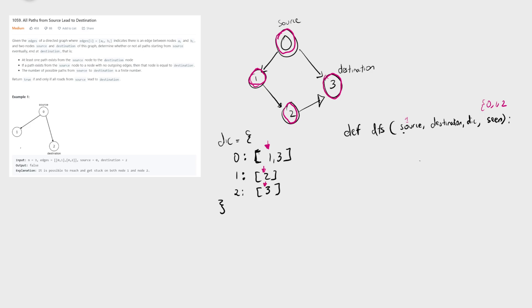We return true and propagate it back through the call stack. Then we go back to zero and continue the second iteration of the for loop, looking at three. From zero we go directly to three, and notice three is not in the seen dictionary — because we check whether a node is the destination before adding it to seen. When we reach three directly from zero, we also return true. This function ends up returning true because all possible paths starting from the source lead to the destination.